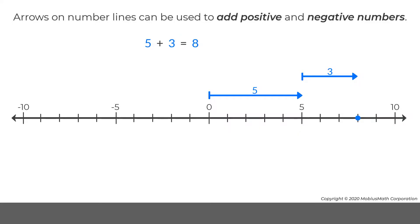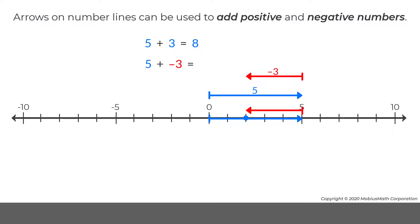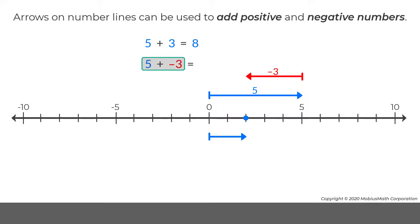To represent 5 plus negative 3, the arrow for 3 switches direction to represent negative 3. When a positive number and negative number are added, the overlapping parts of the arrows combine to make 0. The remaining part of the arrow represents the sum: 5 plus negative 3 equals 2.